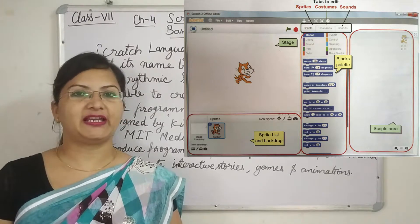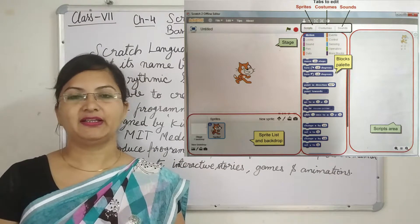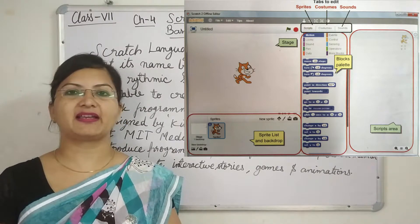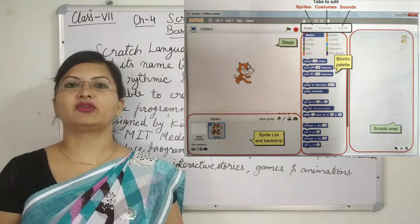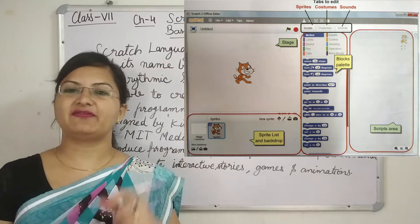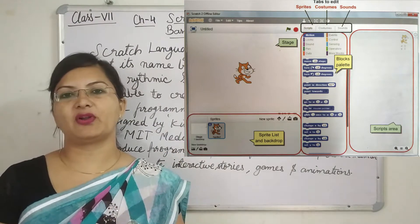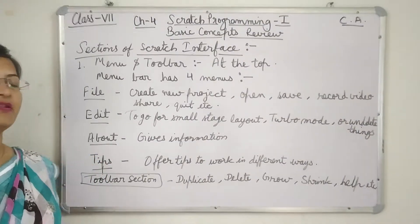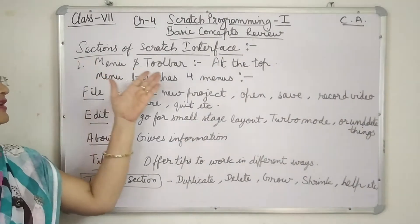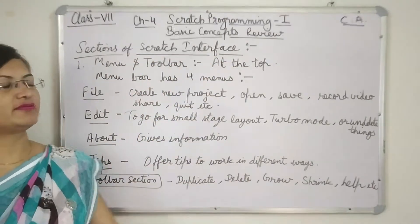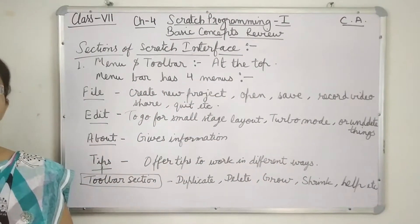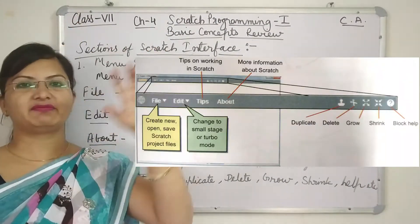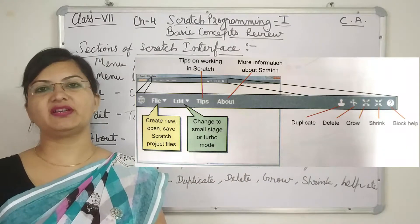To create a story or a game, you have to put blocks one by one according to the story. You don't simply drag any block — you have to choose the specific block from all the available blocks to create your interactive story or game. We will study all the sections of the Scratch interface one by one.